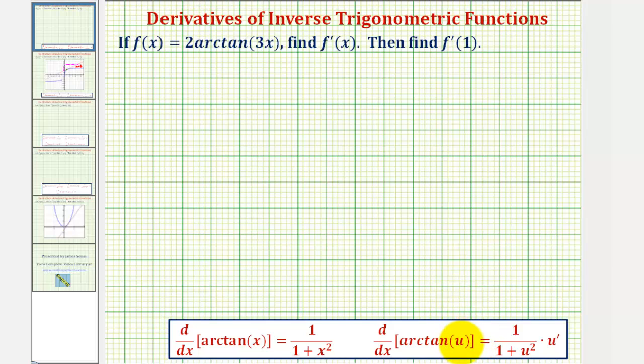So looking at our function, notice how u would be equal to three x, and we also have to find u prime, or du dx. If u is equal to three x, then u prime is equal to three.